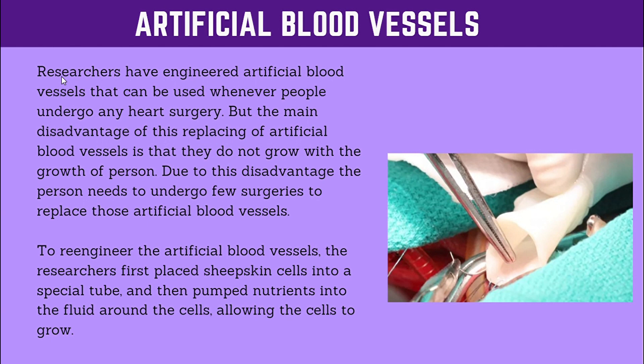So scientists and engineers re-engineered these artificial blood vessels. They first place sheep skin cells into a special tube and then pump nutrients via fluid around the cells, allowing the cells to grow. In this way, modern artificial blood vessels were made that can grow and elongate with the age of the child. So in their lifetime, a person only needs to undergo one surgery, and can be very happy for the rest of their life.